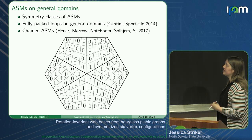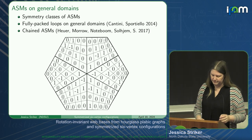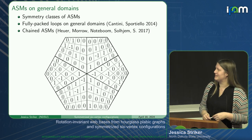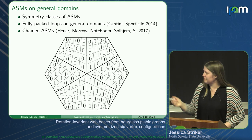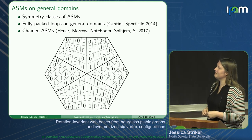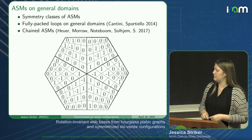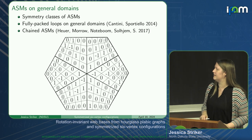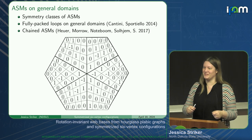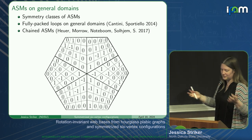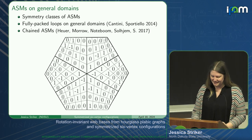Fully packed loops on general domains were studied by Cantini and Sportiello in their series of papers proving the Razumov-Stroganov conjecture, relating the ground state of the O(1) dense loop model with fully packed loops. And this picture here is some work I did with my very first graduate combinatorics class at NDSU—we studied chained alternating sign matrices. Here is a picture of an alternating sign matrix on a three-person chess board, which I gave them at a conference and told them to tell me something about replacements on it.